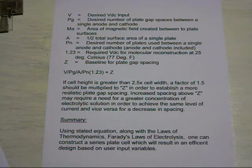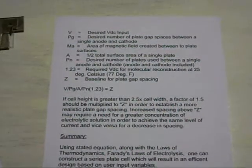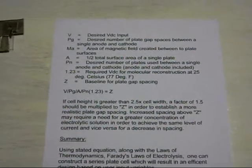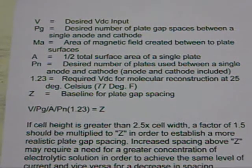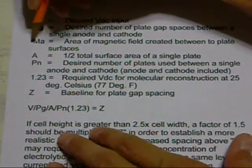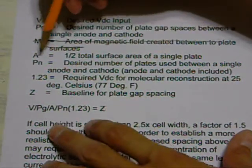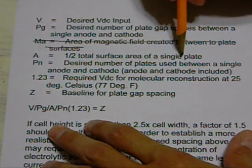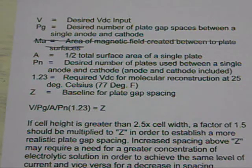I've had to rethink this equation, and this is what I've come up with. Let me try to zoom in here and give you a little bit more information — I know it's hard to read and I apologize. So MA is no longer part of the equation. Instead, we're just calling this the surface area, or rather, half of the total surface area of a single plate.